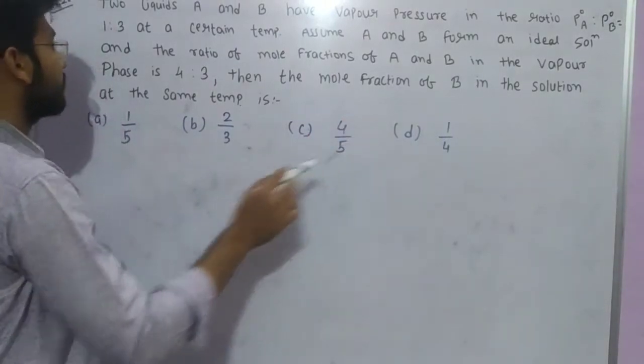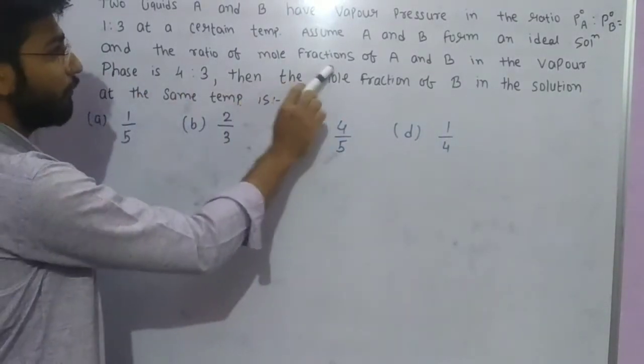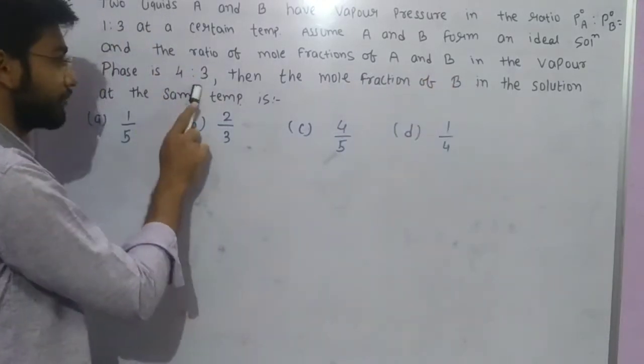Assume A and B form an ideal solution and the ratio of mole fraction of A and B in the vapor phase is 4 ratio 3.